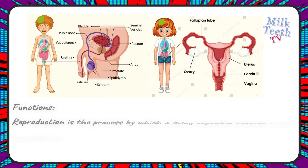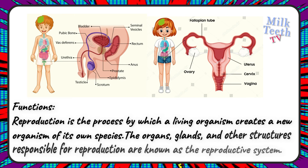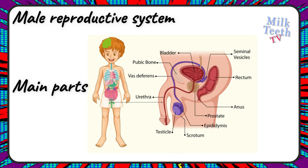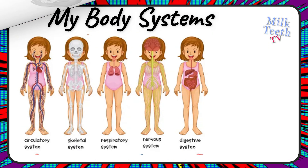The reproductive system. Reproduction is the process by which a living organism creates a new organism of its own species. The organs, glands, and other structures responsible for reproduction are known as the reproductive system, and these are different in males and females. Main parts of the male reproductive system: the urethra, testicle, and the scrotum. Main parts of the female reproductive system: the fallopian tube, ovaries, uterus, and the cervix.